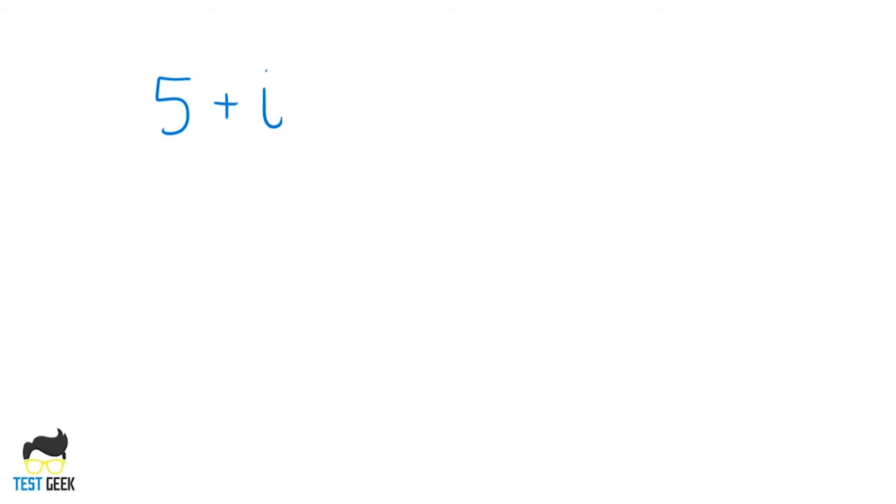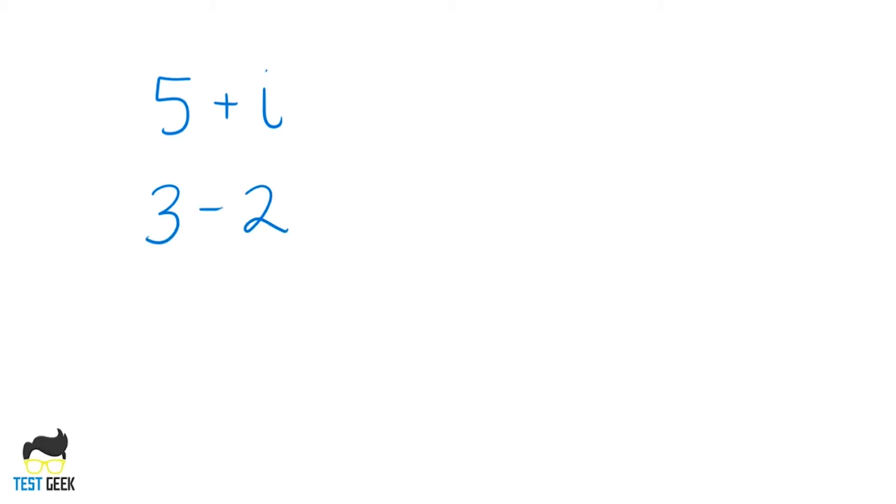But what about complex numbers? What are complex numbers and how do we deal with them for the SAT or ACT? Sometimes people interchange the words imaginary and complex numbers, but technically that's not correct — these two things are a little bit different. A complex number is the sum of a real number and an imaginary number, so something like 5 plus i, or 3 minus 2i. Those would both be complex numbers. For the SAT or ACT, it all comes down to your ability to handle i.